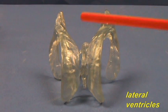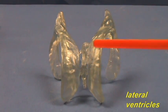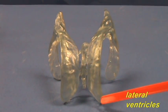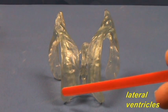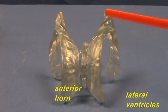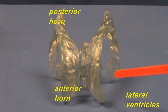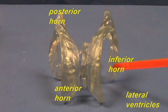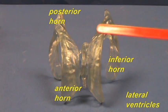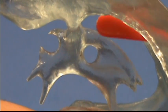The lateral ventricles are here and here. Here is the anterior horn, posterior horn, and the inferior horn on either side. Here is a view of the third ventricle.